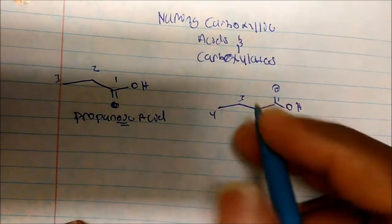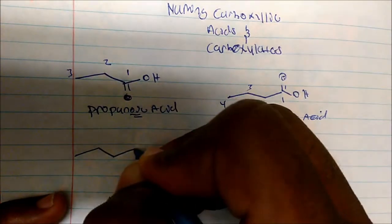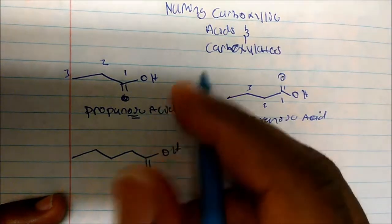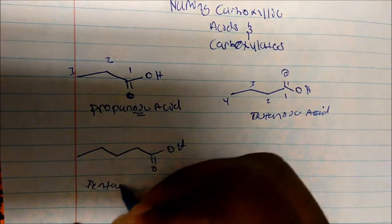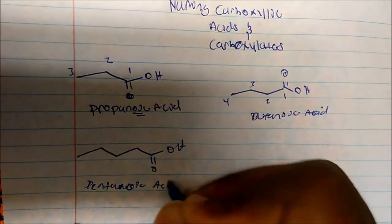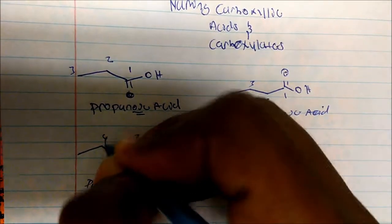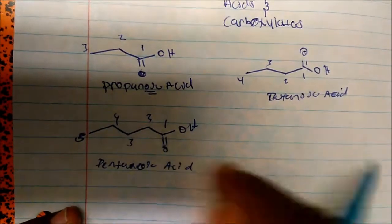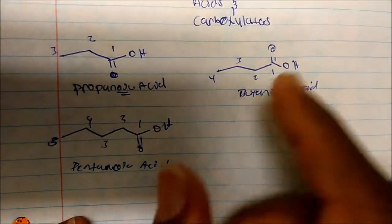What about this one? This is pentanoic acid, because you have carbon 1, 2, 3, 4, 5. So we say this is pentane, but because it's a carboxylic acid, we say pentanoic acid.